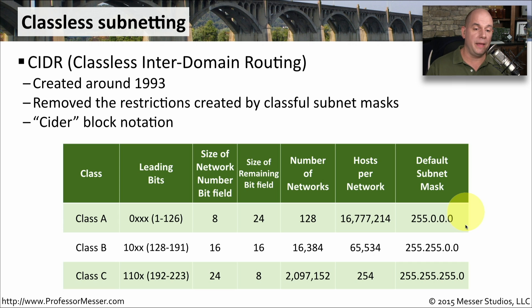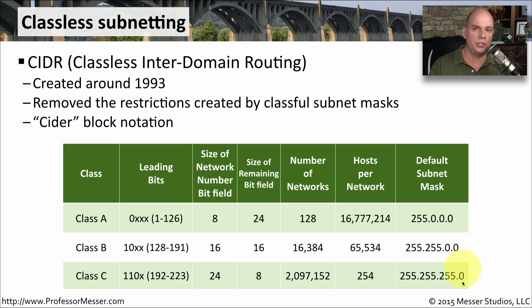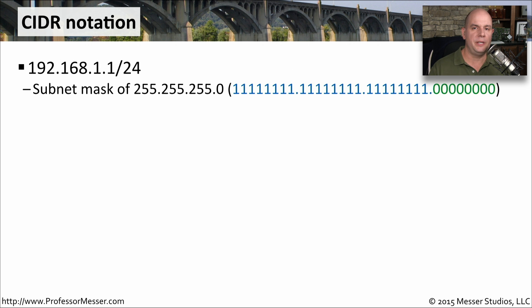It also meant that the subnet masks did not have to end on a single octet. We weren't restricted to simply 255.0.0.0, or 255.255.0.0, or the Class C at 255.255.255.0. We could pick subnet masks that were somewhere in between. We call this notation CIDR notation or CIDR block notation.